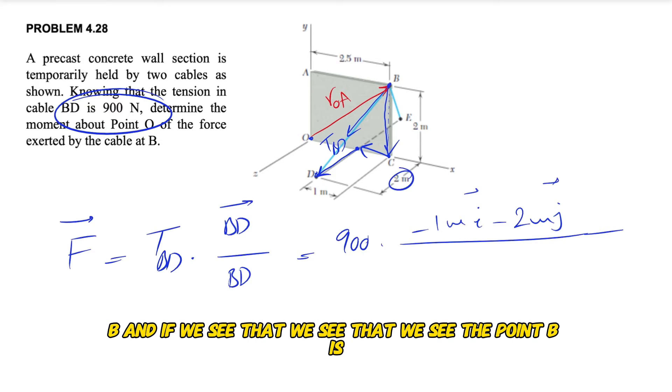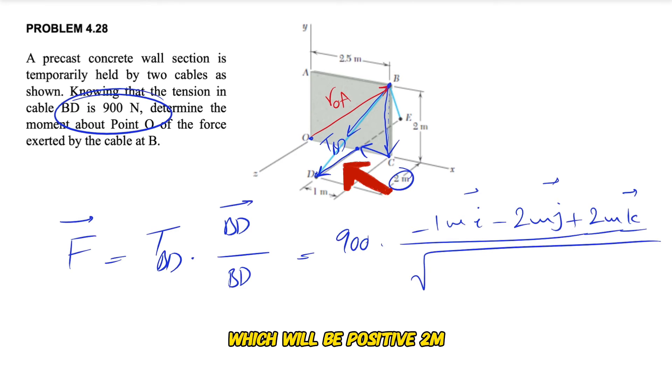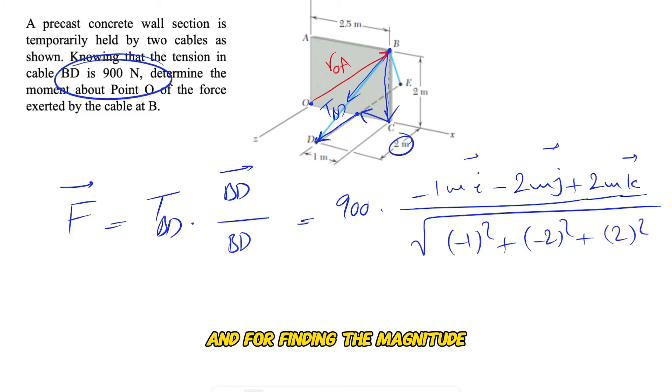The last one is the Z component. Point B is at zero, and we are moving from here to here, which will be positive 2 meters. For finding the magnitude, we simply have the square root of...